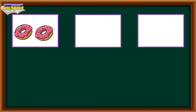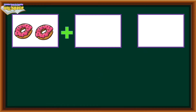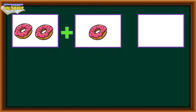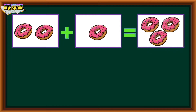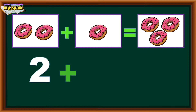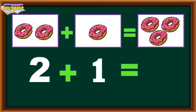2 donuts plus 1 donut equals 3 donuts. 2 plus 1 equals 3.